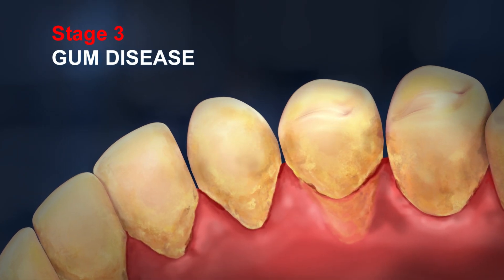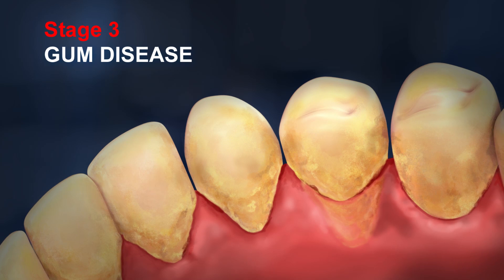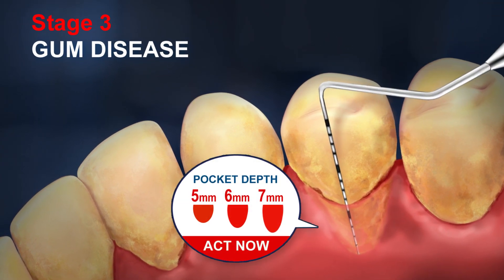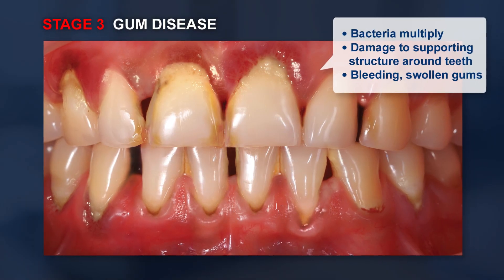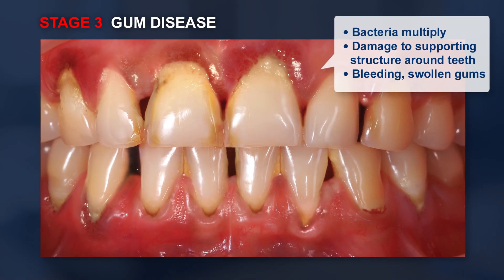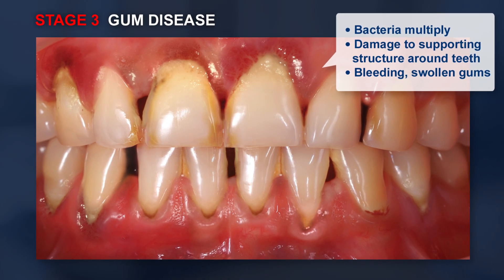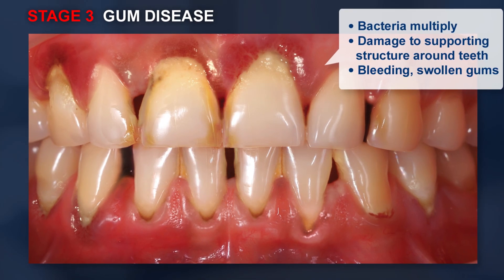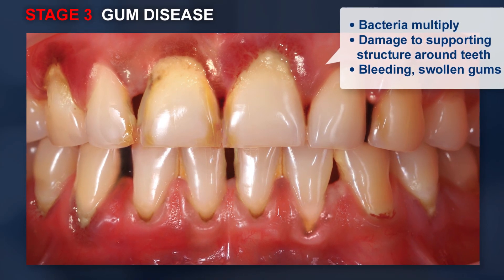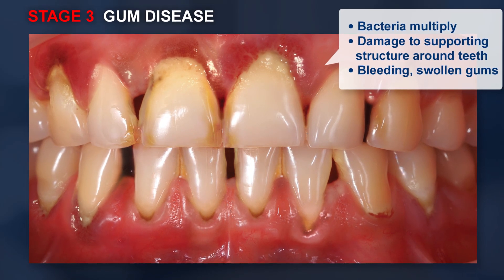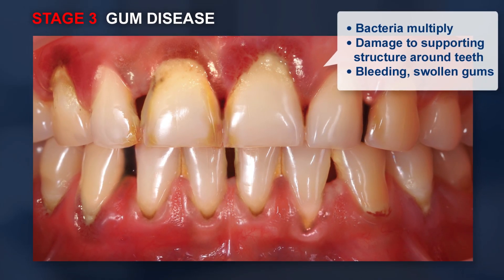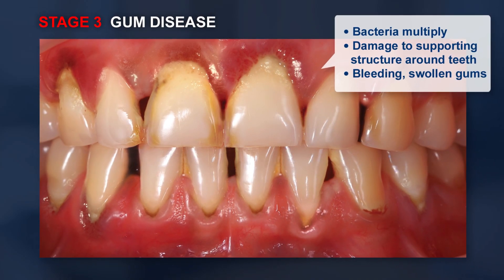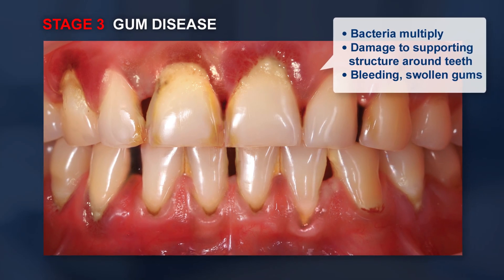If gingivitis goes untreated, the condition may advance to stage 3, a more aggressive form of the disease. Symptoms become more visible with tender, swollen gums that bleed easily, and pocket depths can reach 5 to 7 millimeters. Bacteria multiply, invade the gum tissue, and spread to the underlying bone that supports the teeth. Recommended treatments may include scaling and root planing — a deep cleaning below the gum line — and a locally delivered antibiotic such as Arestin, to fight the infection and allow gum tissue to heal.